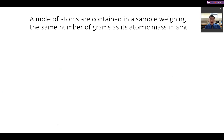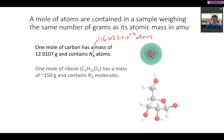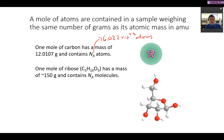A mole of atoms is the amount contained when you weigh out a mass equal to its atomic mass. For example, a mole of carbon has a mass of 12.0107 grams and contains 6.022 × 10²³ atoms. A mole of ribose has a mass of approximately 150 grams and contains that same number of molecules. So a mole of carbon is 12 grams, while a mole of ribose is 150 grams — different masses because each element and molecule weighs a different amount.